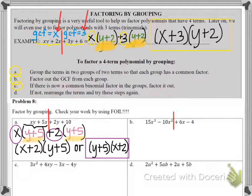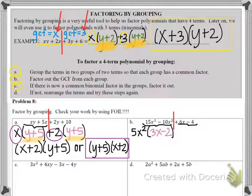Let's look at problem B. So first I'm going to split the polynomial into two groups of two. And when I look at the 15x cubed minus 10x squared, I see the GCF is 5x squared. And after I factor out the 5x squared, I'm left with 3x minus 2. Now I'm going to look at 6x minus 4. The GCF is plus 2. And hey, look at that. It also leaves behind 3x minus 2.